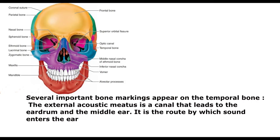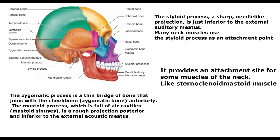Several important bone markings appear on the temporal bone. The external acoustic meatus is a canal that leads to the eardrum and the middle ear — it is the route by which sound enters the ear. The styloid process, a sharp needle-like projection, is just inferior to the external auditory meatus; many neck muscles use it as an attachment point. The zygomatic process is a thin bridge of bone that joins with the cheekbone anteriorly. The mastoid process, which is full of air cavities called mastoid sinuses, is a rough projection posterior and inferior to the external acoustic meatus.